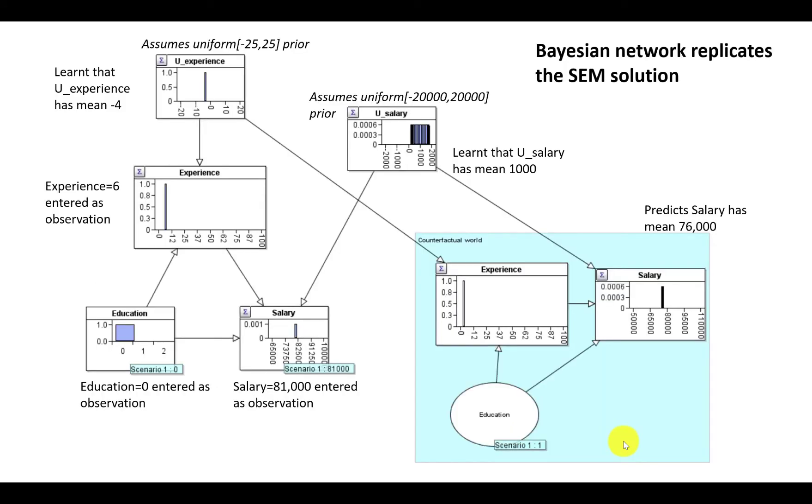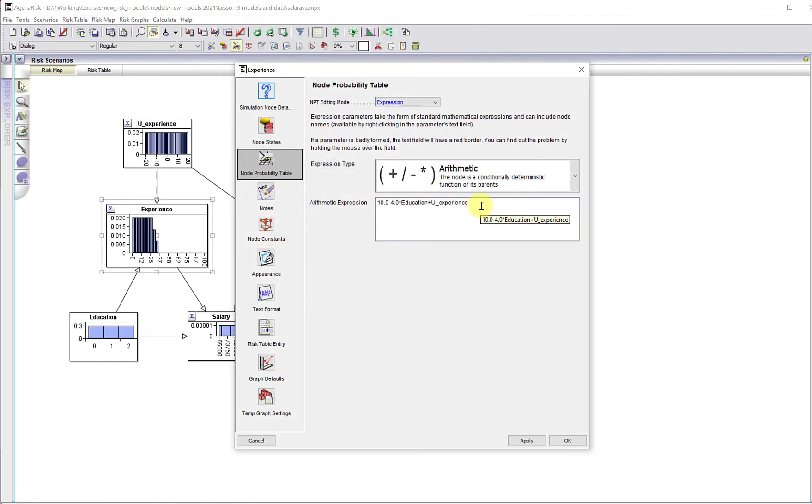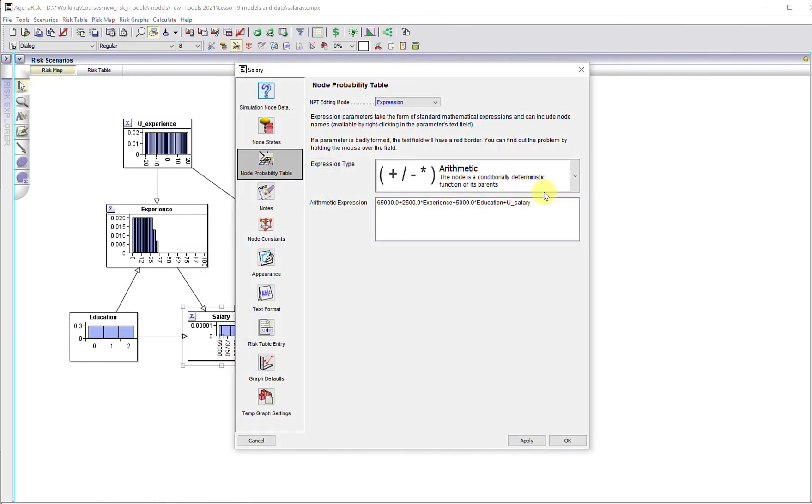But next, let's look at the Bayesian network solution. Here is the structural equation model implemented as a Bayesian network. So for example, if we look at experience here, and how the probability table for that is defined, it's exactly the same arithmetic expression as used in Pearl's example. And similarly, the salary here is the same as the formula for salary in the example.